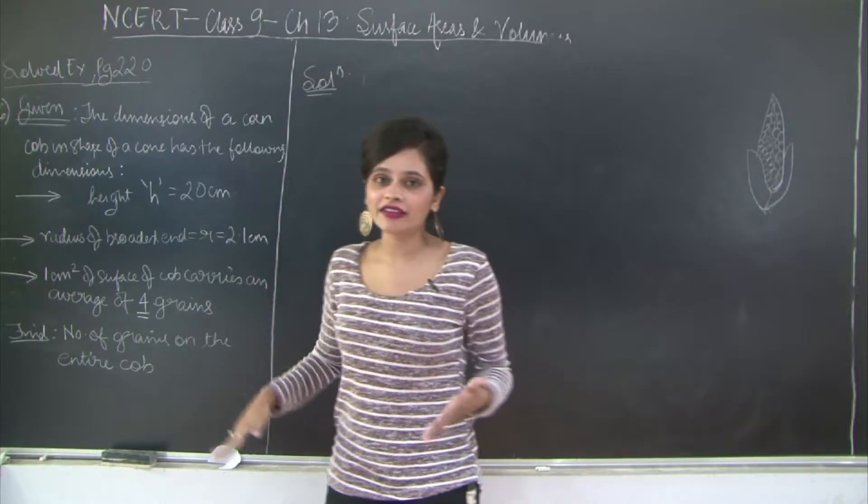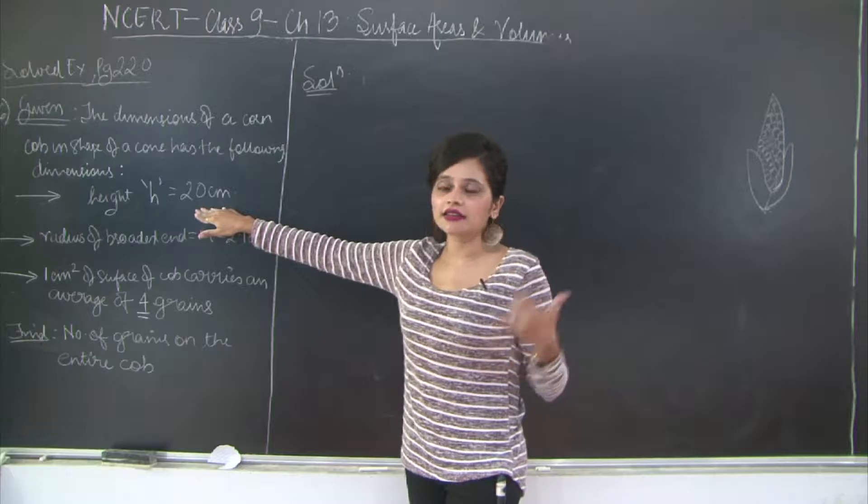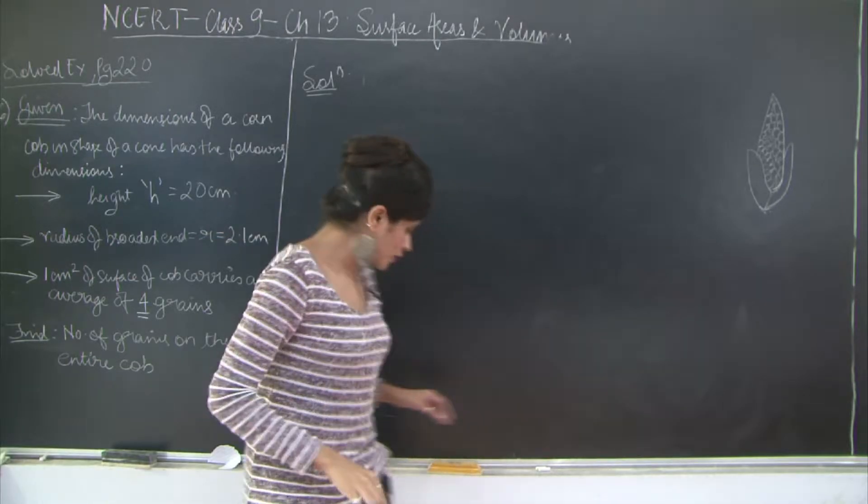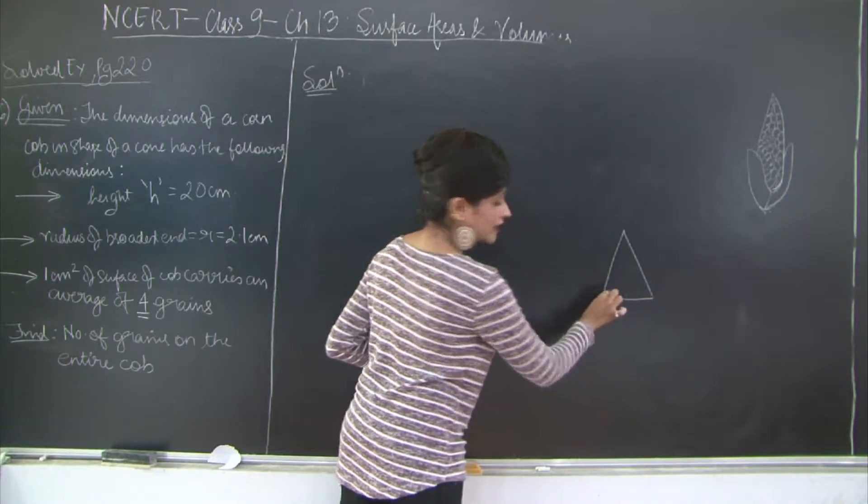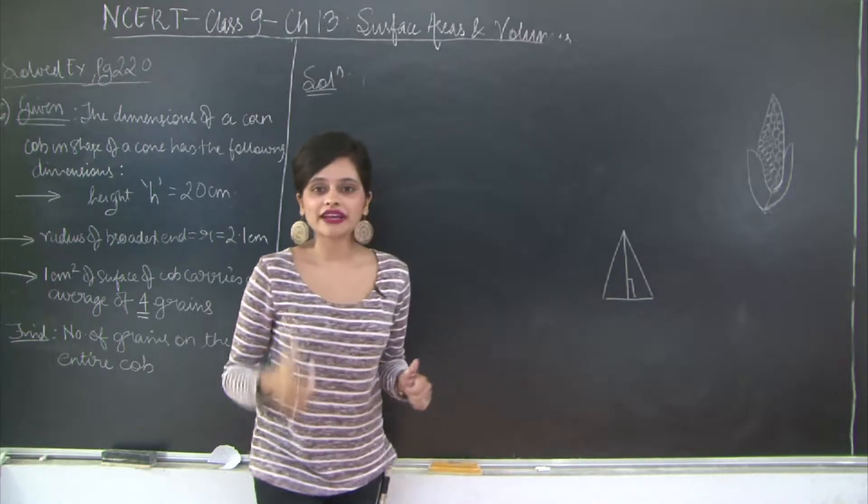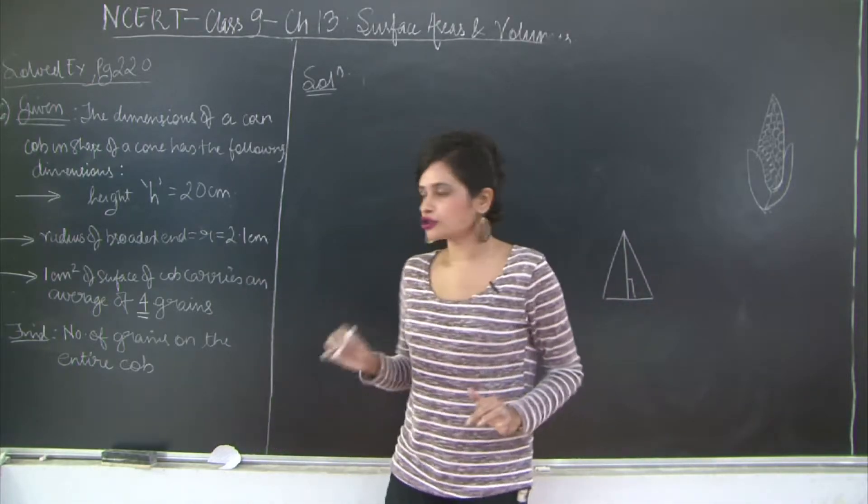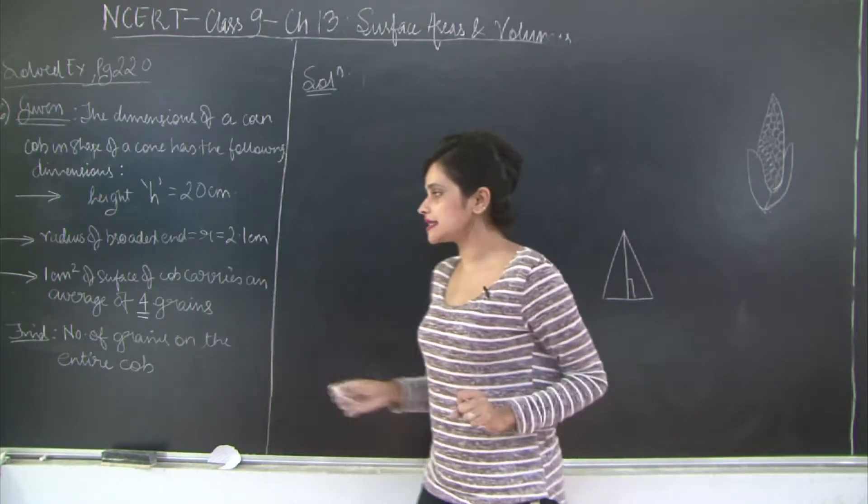The height is given as 20 cm. So when we talk about height, it's not explicitly given that it's the sloping length. So we are going to consider this as the perpendicular height from the top. We will have to find the sloping length in order to find whatever we need to find when it comes to a right circular cone.